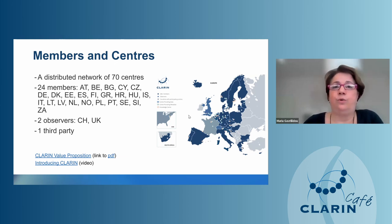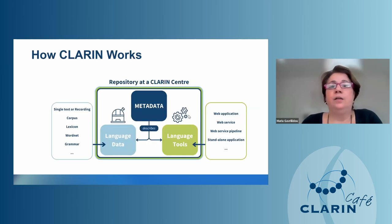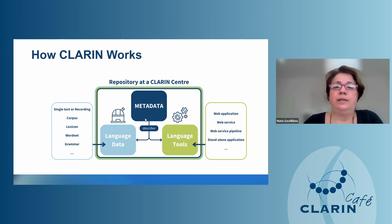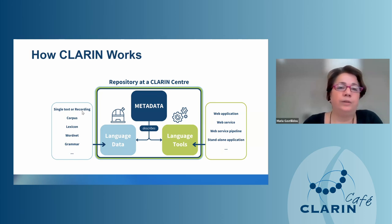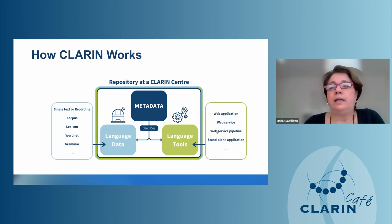Each repository at a CLARIN center can have both language data and language tools. Both types of resources are described through a common metadata schema. Language data can be single texts, recordings, collections, corpora, lexica, word nets, grammars, and so on. Tools can be standalone applications, web services, workflows including many web services in a pipeline, or web applications.